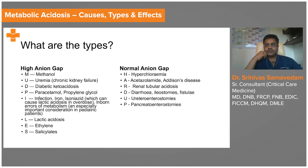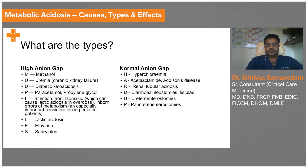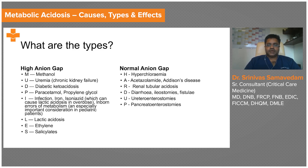Methylene glycol and salicylates in the blood can also produce high anion gap metabolic acidosis. Normal anion gap metabolic acidosis, on the other hand, is produced by hyperchloremia from exogenous chloride administration, acetazolamide administration, renal tubular acidosis caused by damage to the renal tubules by drugs or infection, diarrhea, ileostomies, enterocutaneous and enteroureteric fistulas, ureterosigmoidostomies, and pancreatoenterostomies.